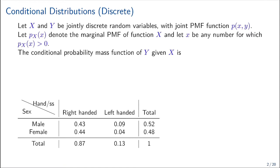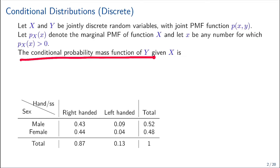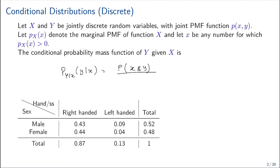Let's start by looking into conditional distribution in the discrete case. If x and y are jointly discrete random variables with joint probability mass function p(x, y), and p(x) denotes the marginal probability mass function of x, and x is any number for which p(x) is greater than zero, the conditional probability mass function of y given x is equal to the probability of the intersection of x and y divided by the probability of x, which equals the joint probability distribution p(x, y) divided by p(x).